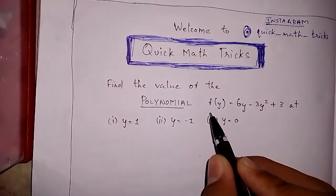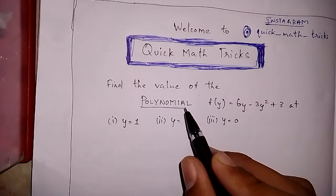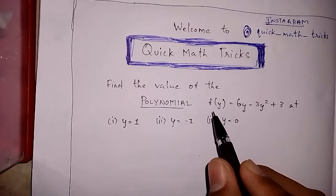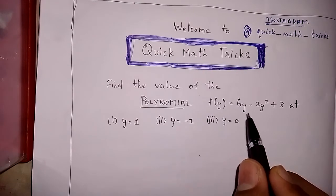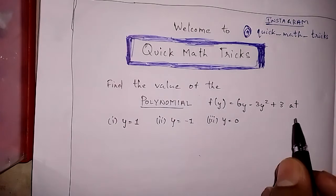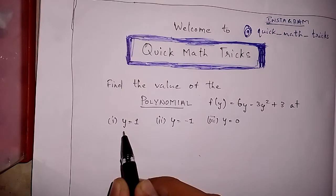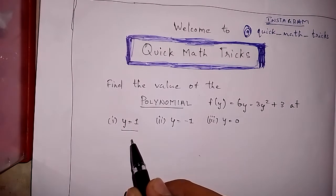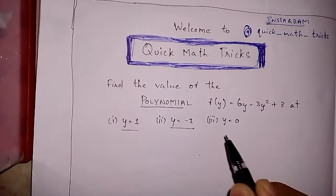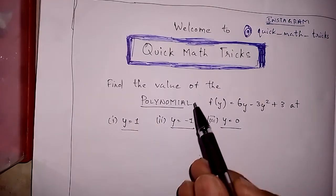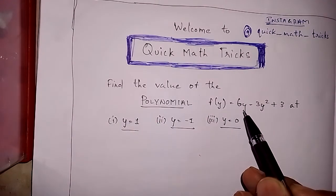The given question: f(y) is equal to 6y minus 3y squared plus 3. The y values to evaluate are: first value is 1, second value is minus 1, third value is 0. We have to apply these values on this polynomial.